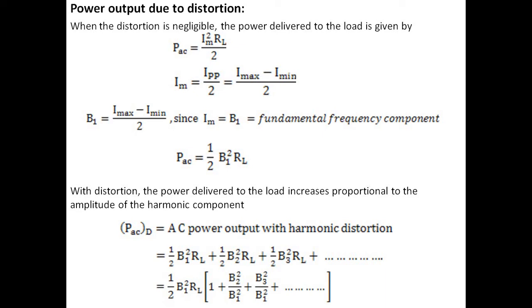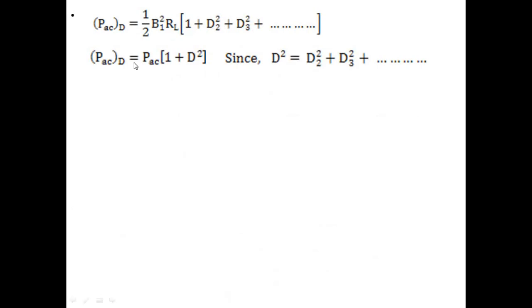Taking the fundamental frequency component as common: (1/2)·B1²·RL, factored out gives 1 plus B2²/B1² plus B3²/B1² plus B4²/B1² and so on. Simplifying, this distorted AC power equals (1/2)·B1²·RL into (1 + D2²).